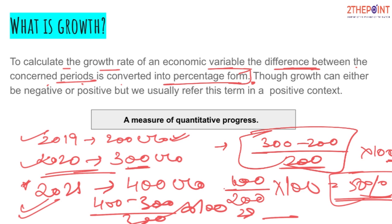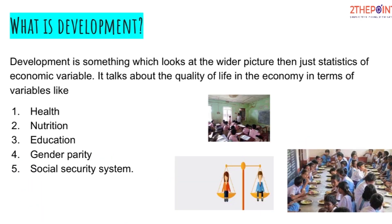From this we can conclude that growth is something which can be quantified — it is a measure of quantitative progress. Growth revolves around numbers, something which can be quantified. It does not talk about the quality — for example, it doesn't tell us whether consumer goods or heavy industrial machinery are being produced. Growth just measures quantifiable progress. So then, what is development?